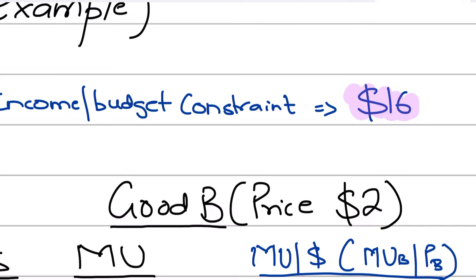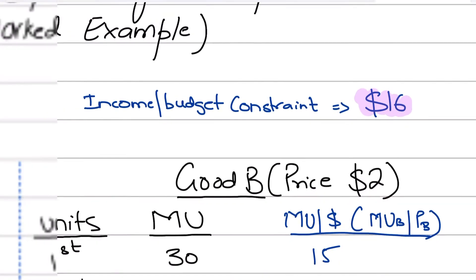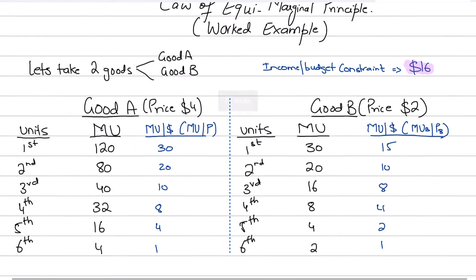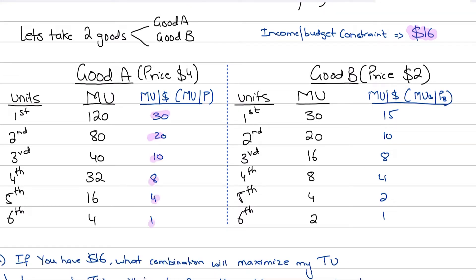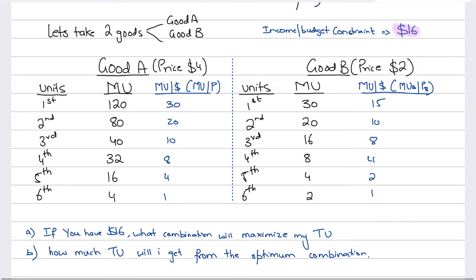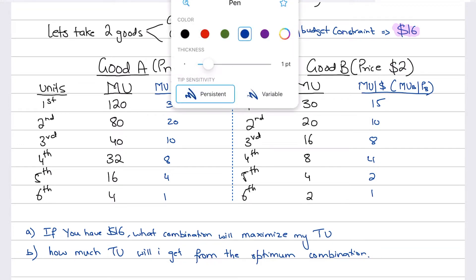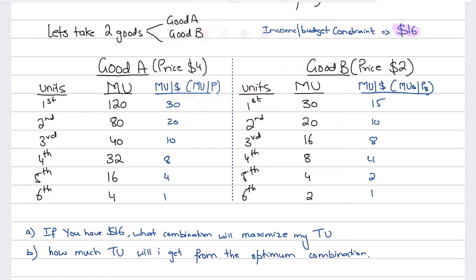This is such a great concept. If you don't just rote-learn the formula but understand the basis and the concept behind it, you will write a much better answer in your essay question and impress the examiner. We have a budget of 16 dollars, two goods A and B, and the marginal utility per dollar is given: for good A it's 30, 20, 10, 8, 4; and for good B it's 15, 10, 8, 4, 2, 1. Good A costs 4 dollars per unit and good B costs 2 dollars per unit.